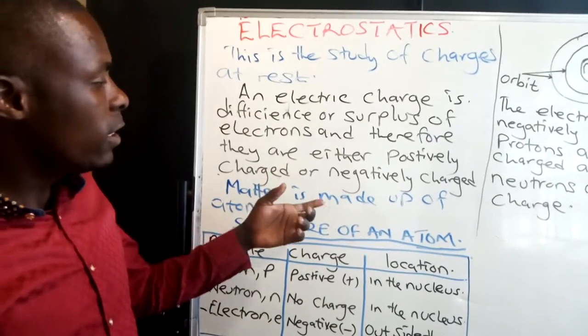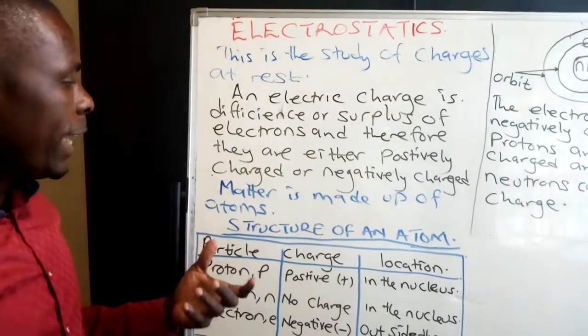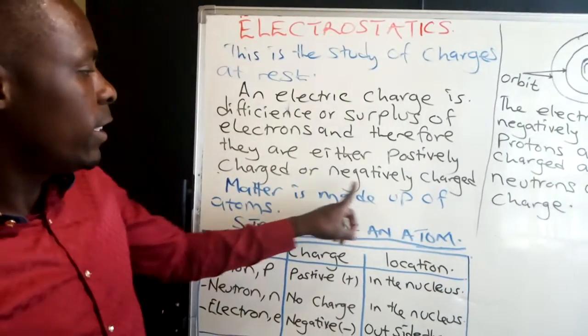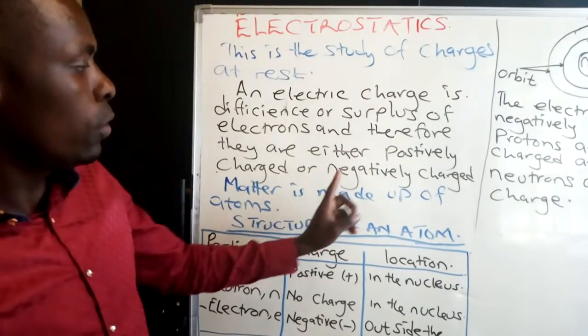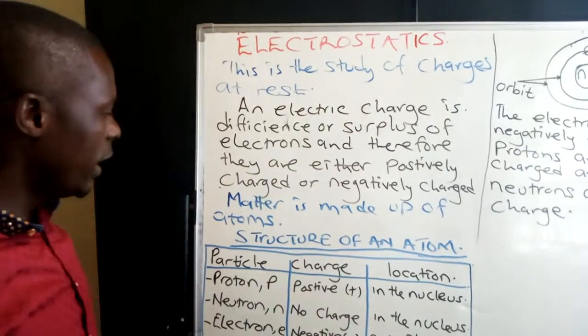But when it is negatively charged, it means that it just got an electron from somewhere. So it is negatively charged because it borrowed electrons. It is positively charged because it gave out electrons.